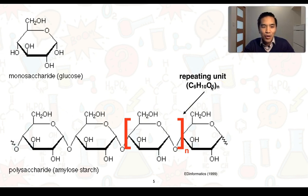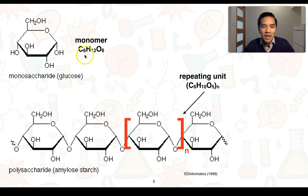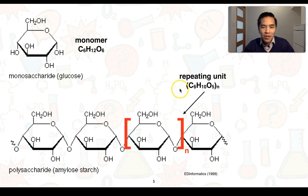If we go to the monomer used to make this up — which is glucose — and count the atoms, we find the monomer has a molecular formula of C6H12O6. There is a clear difference in the formulas for both the monomer and the repeating unit: one indicates it repeats a number of times, and one is an individual or discrete unit.